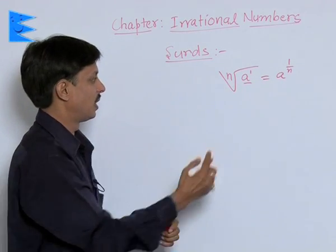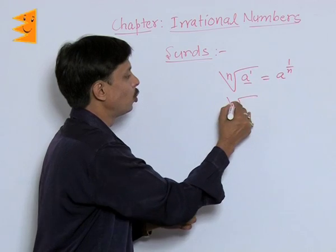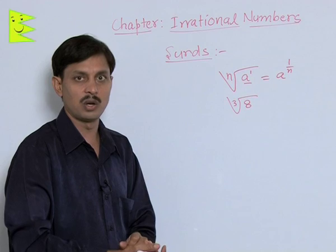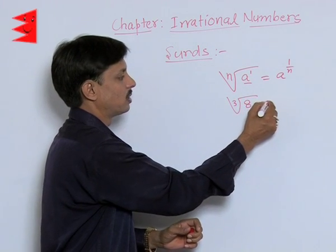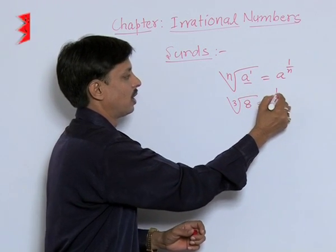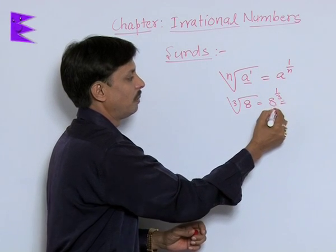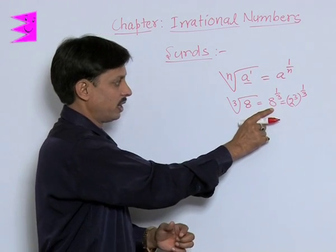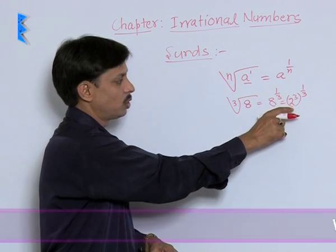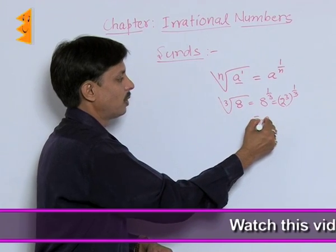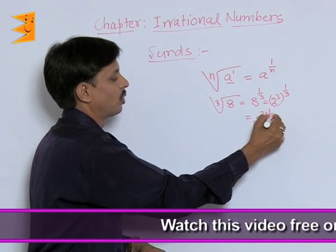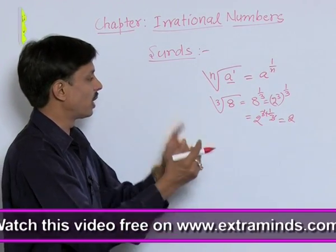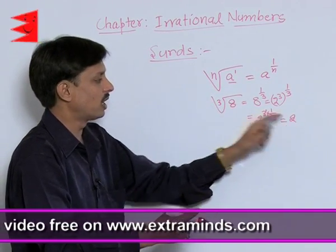I am taking an example: cube root of 8. Is it a SIRd or not? The value of cube root of 8 is 8 to the power 1 upon 3, which can be written as 2 cube whole to the power 1 upon 3. 8 is 2 times 2 times 2, this is 2 cube, power 1 upon 3 becomes 2 to power 3 times 1 upon 3, which becomes 2. The cube root of 8 is 2.